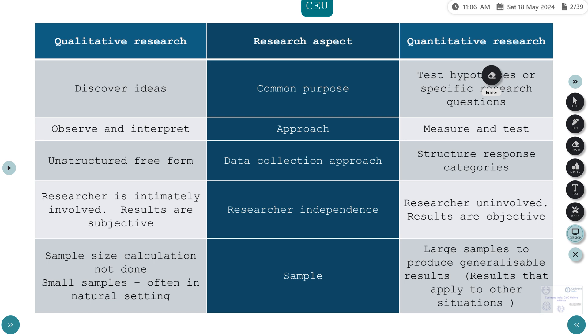In qualitative research, sample size calculation is not done; generally there are small samples in a natural setting. In quantitative research, you have to pre-determine your sample size and produce fairly generalizable results that are applied to other situations.